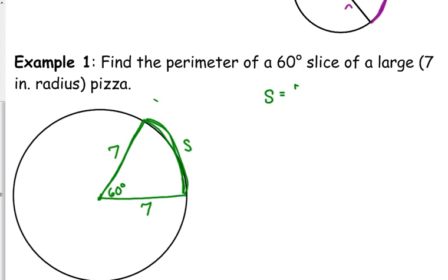So, we need to find this length right here, that's going to be s. S is equal to the radius times theta, but theta is not 60. It must be in radians. So, we need to convert 60 degrees to radians. 60 over 180 is one-third, so that's pi over 3 radians.